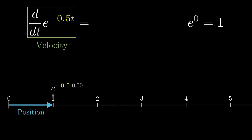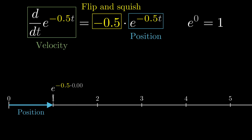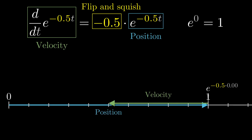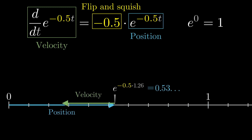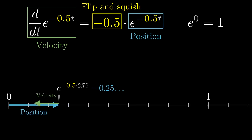If that constant was negative — say negative 0.5 — then your velocity vector is always negative 0.5 times your position vector, meaning you flip it around 180 degrees and scale its length by a half. Moving in such a way that your velocity always matches this flipped and squished copy of your position vector, you'd go the other direction, slowing down in an exponential decay towards 0.